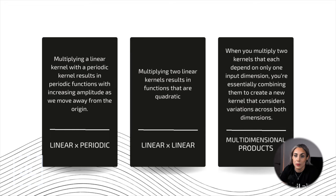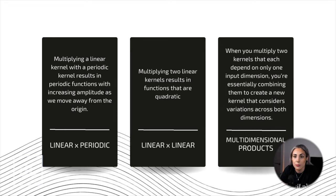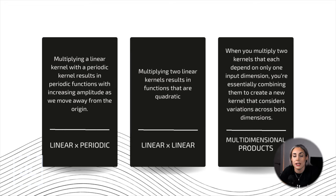Multiplying a linear kernel with a periodic kernel results in a periodic function with increasing amplitude as we move away from the origin. Multiplying two linear kernels results in quadratic functions. When you multiply two kernels that each depend on only one input dimension, you combine them to create a new kernel that considers variations across both dimensions — for example, multiplying kernels for temperature and humidity separately will produce a kernel that considers both factors together.